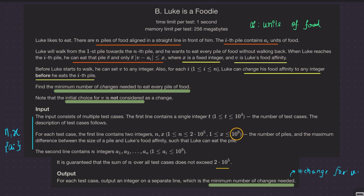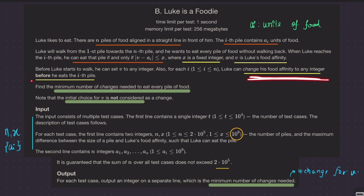Let me summarize the question. This guy wants to eat n piles of food aligned in a straight line. The i-th pile contains a_i units of food. He walks from the first pile towards the n-th pile, eating every pile. But he can only eat a pile if the absolute value of v minus a_i is less than or equal to x. Here, x is a fixed positive integer, and v is Luke's food affinity, which he can change to any integer before eating the i-th pile. We want to find the minimum number of changes needed to eat every pile. Note that the initial choice of v is not considered a change.